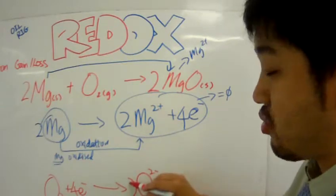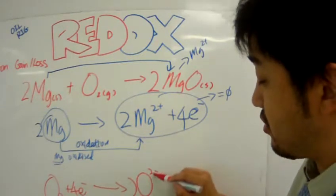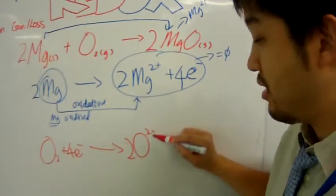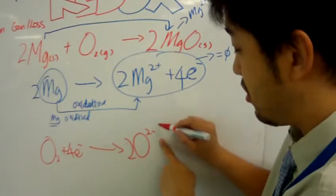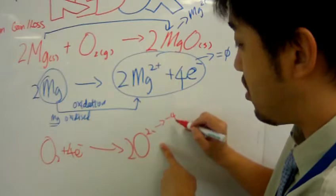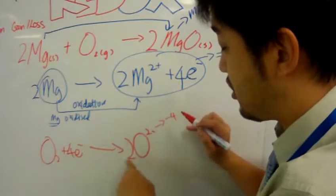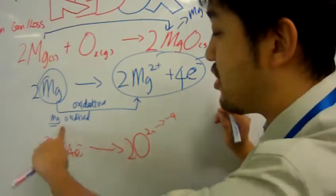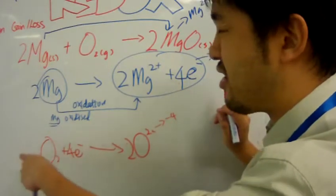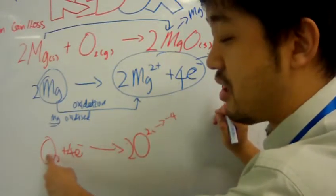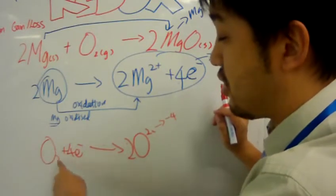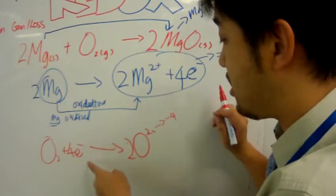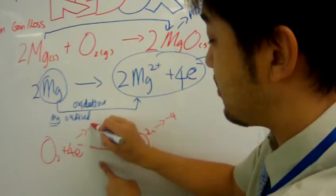Why? Because two oxides here, each oxide with a minus two charge, with a minus two charge will equal to minus four. And so, the charge on the right side of the equation is a minus four. The charge originally on the left side is a zero because oxygen has no charge.